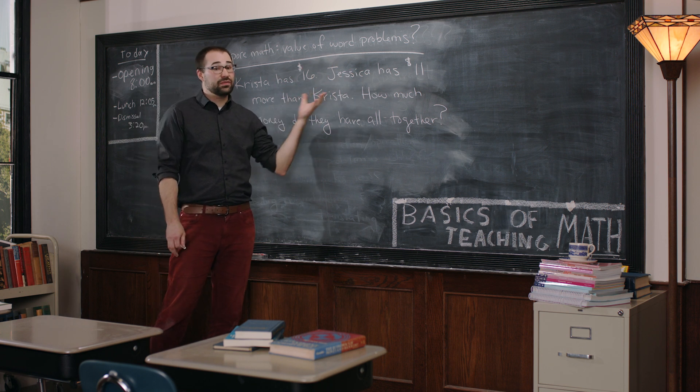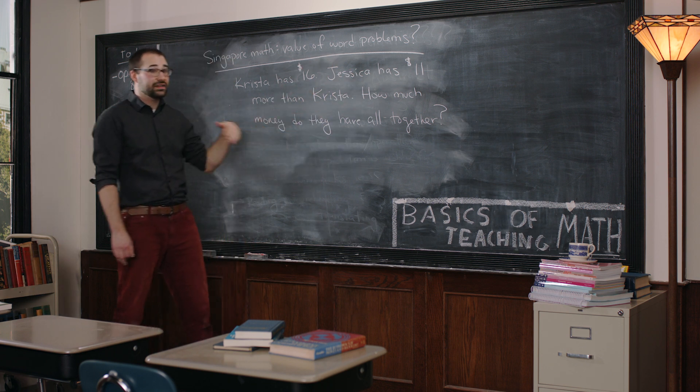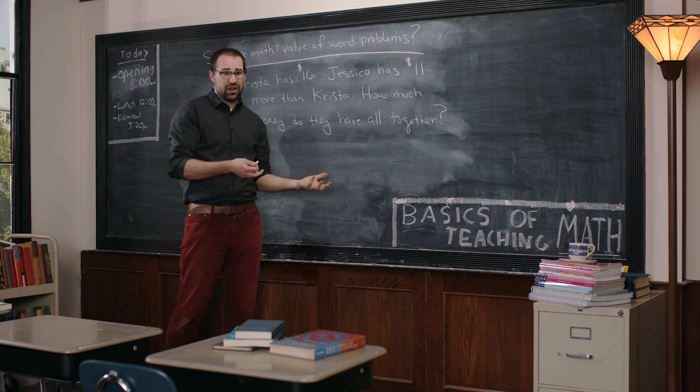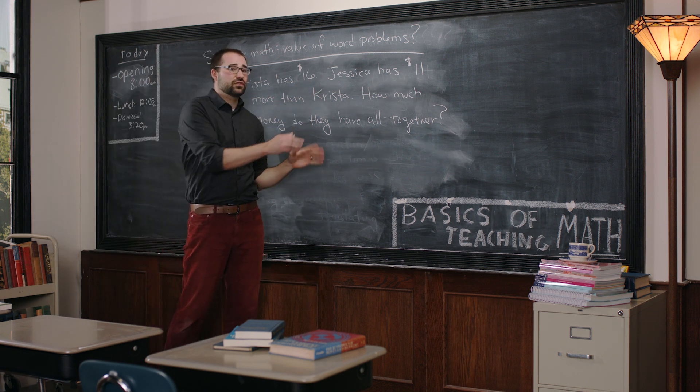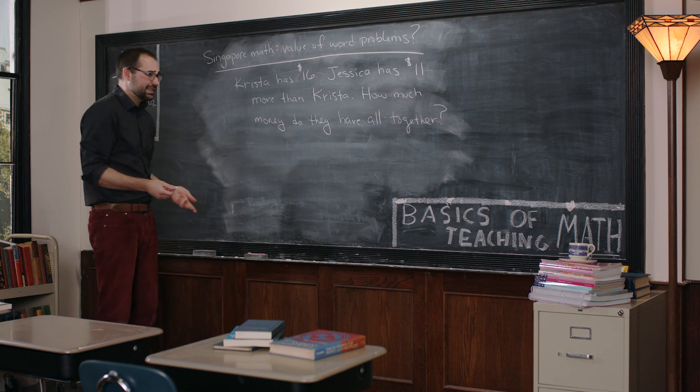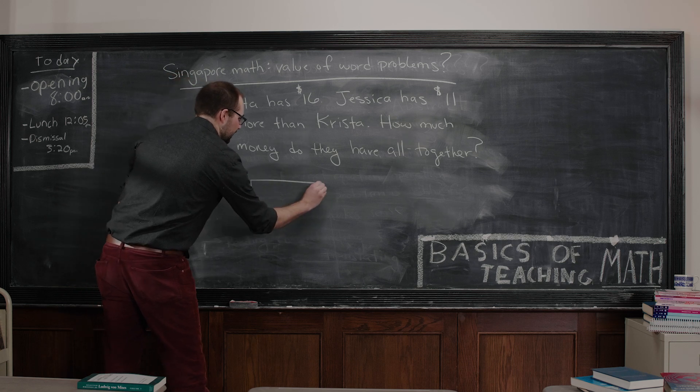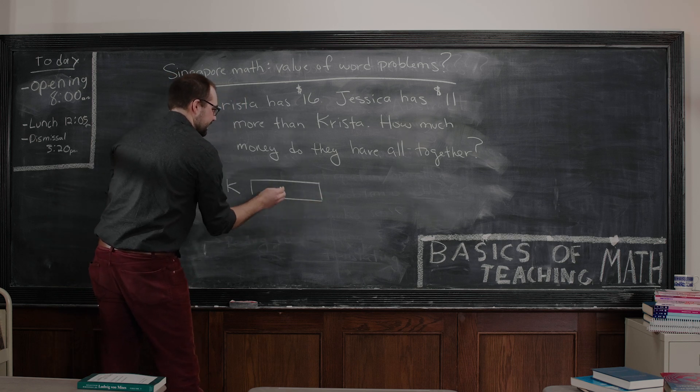Go slowly, go step by step. I like to say read for a little bit and stop, and then draw a little bit, and then read and stop and draw. That's what I'm going to do here. If Krista has $16, what I can do is I can say Krista has $16 here.